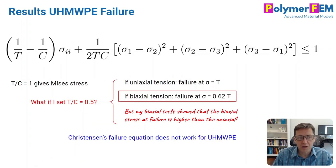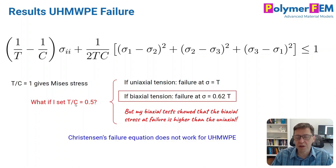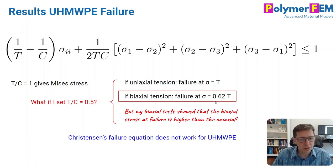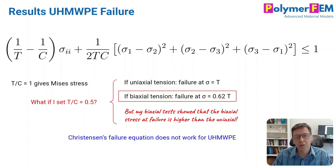Applying Christensen's approach to these two data points, I'm selecting T divided by C equal to 0.5. Note that if T equals C, we get Mises, and that doesn't work, so T/C should be less than one. In uniaxial tension, the failure stress still comes out to sigma equal to T. But in biaxial tension, the equation gives failure at 0.62T, which is lower than uniaxial tension. My data for ultra high molecular weight polyethylene indicates the opposite — so Christensen's failure condition doesn't actually work for UHMWPE comparing biaxial to uniaxial loading.